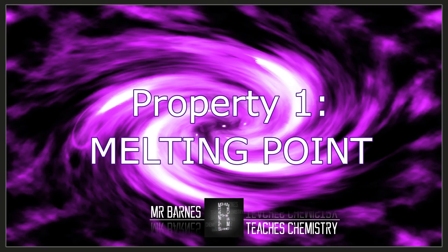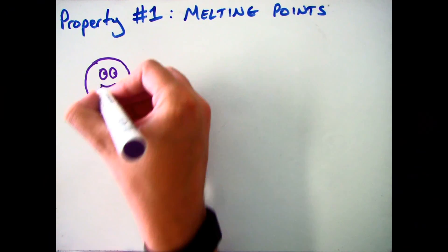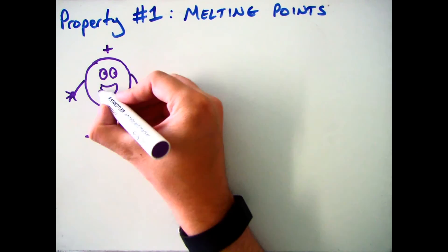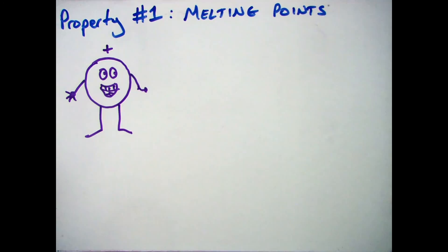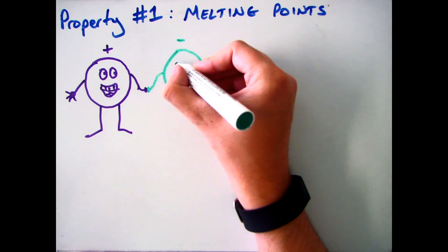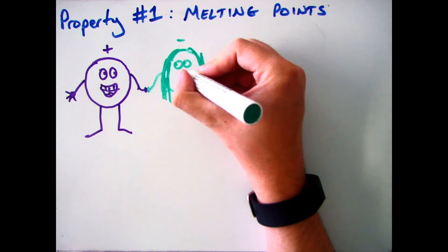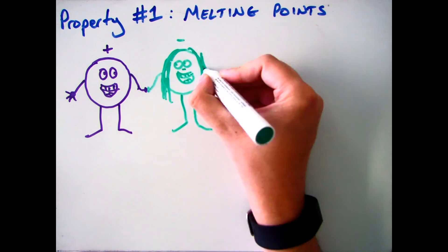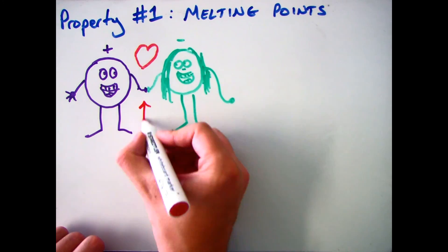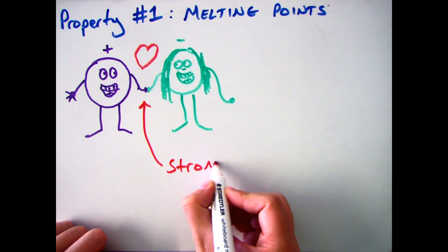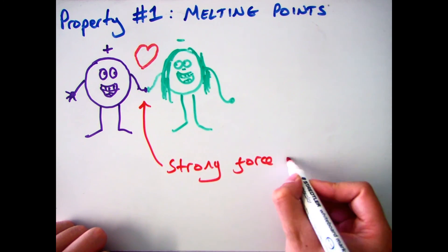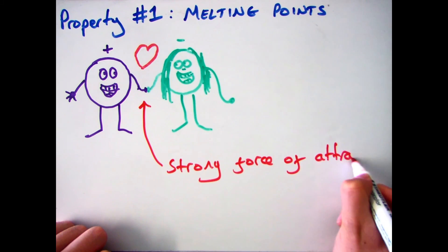Hello there and welcome to this video on ionic compounds and the main properties of them. The first property we're going to have a look at is the melting points. The key thing to note is that all ionic compounds have high melting points and boiling points.